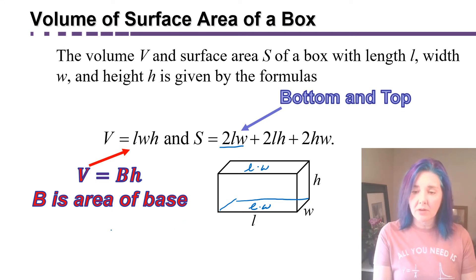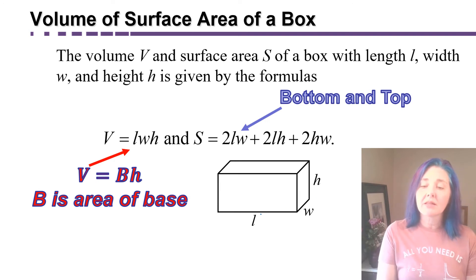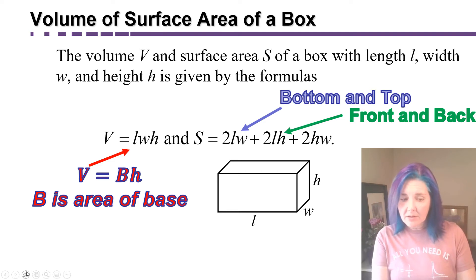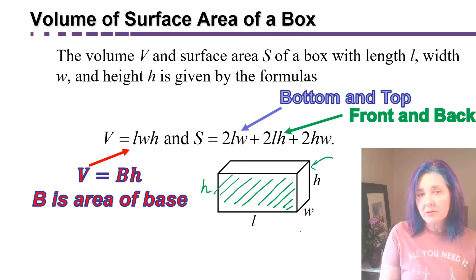Now let's see where the next term comes from. The next term says two times length times height. Which sides do you think have an area that can be found by multiplying the length times the height? If you said the front and the back of this box, you're correct. The front of this box has the dimensions length times height, but so does the back, which we can't see. Back here, there's a corresponding side that also has an area of length times height. So if we're looking for the surface area, we're going to need two times the length times the height to get the wrapping paper, the sides of the wrapping paper that would go on the front and the back of the box.